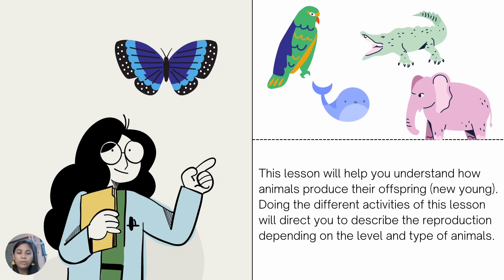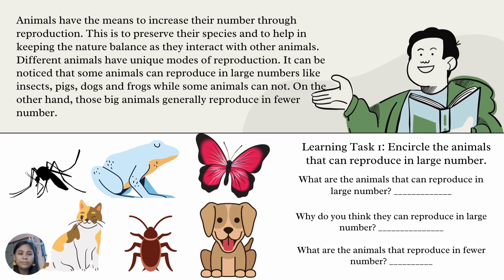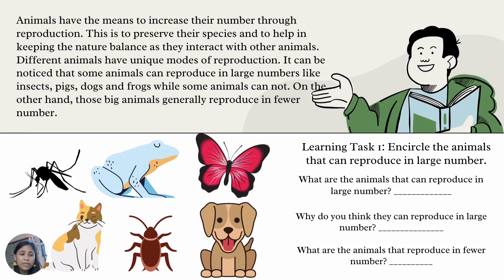This lesson will help you understand how animals produce their offspring or new young. Doing the activities of this lesson will direct you to describe reproduction depending on the level and type of animals. Animals have the means to increase their number through reproduction — to preserve their species and to help keep nature balanced as they interact with other animals.